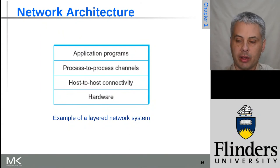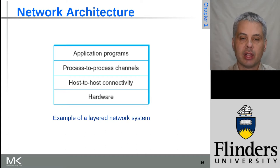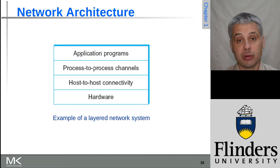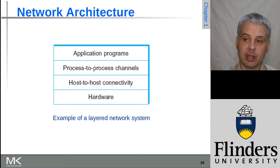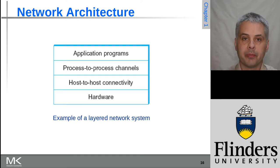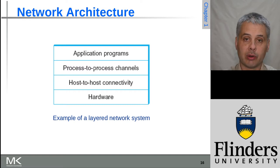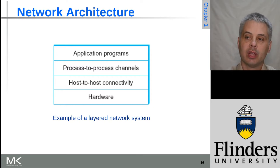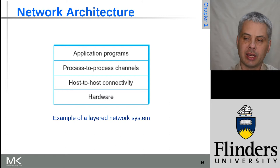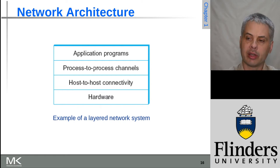One of the key ways this is addressed is by having a layered network design, so that any one particular layer can be replaced with a better version without affecting the higher or lower layers. There are a whole bunch of different layered approaches — two very common ones are the OSI seven-layer model and the Internet five-layer model. Both are covered in the textbook. Here we'll just talk about the general idea of a layered network.